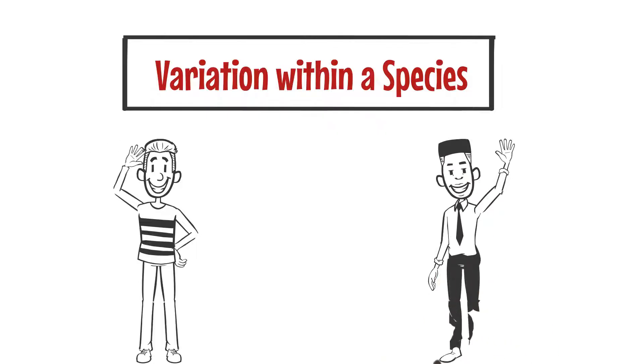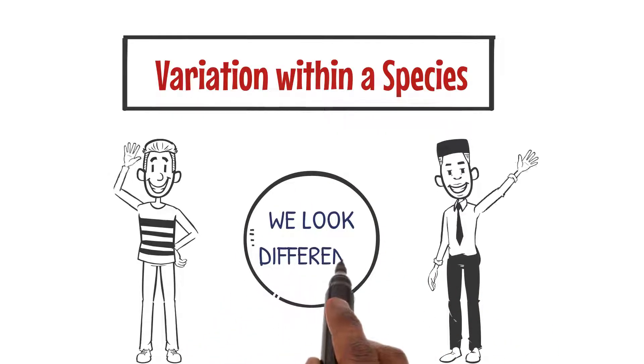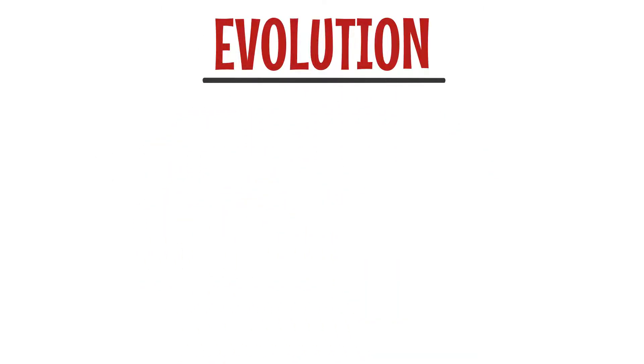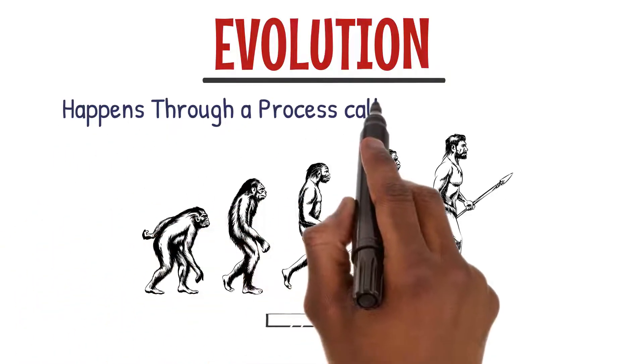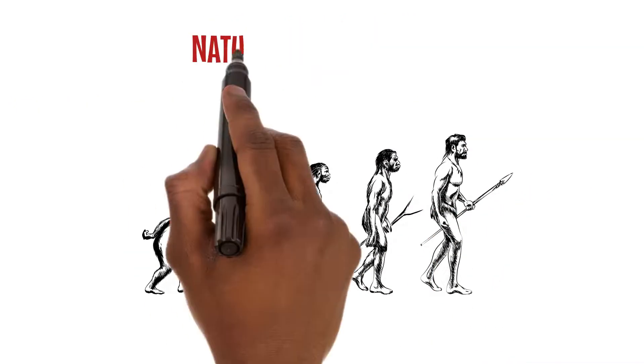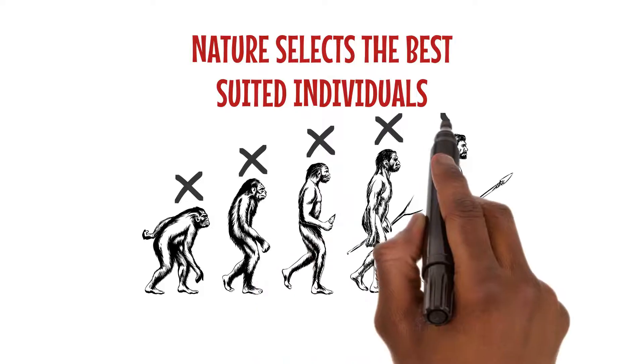Now here comes the exciting part: evolution. Evolution is the gradual change in species over time. It happens through a process called natural selection—nature's way of selecting the best-suited individuals for survival.